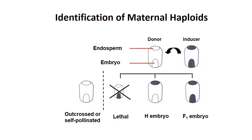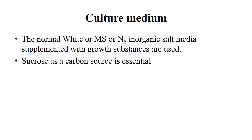In gynogenesis the major step is identification of maternal haploids. The maternal haploids are identified because in homozygous form they will give the proper regenerated plants. For example, in the H embryo approach, one is the inducer and one is the donor — the donor is female and inducer is male. In this cross, the F1 embryo should be a maternal haploid. The culture medium for gynogenesis uses White's or MS and B6 inorganic salt media supplemented with growth substances and sucrose as a carbon source.